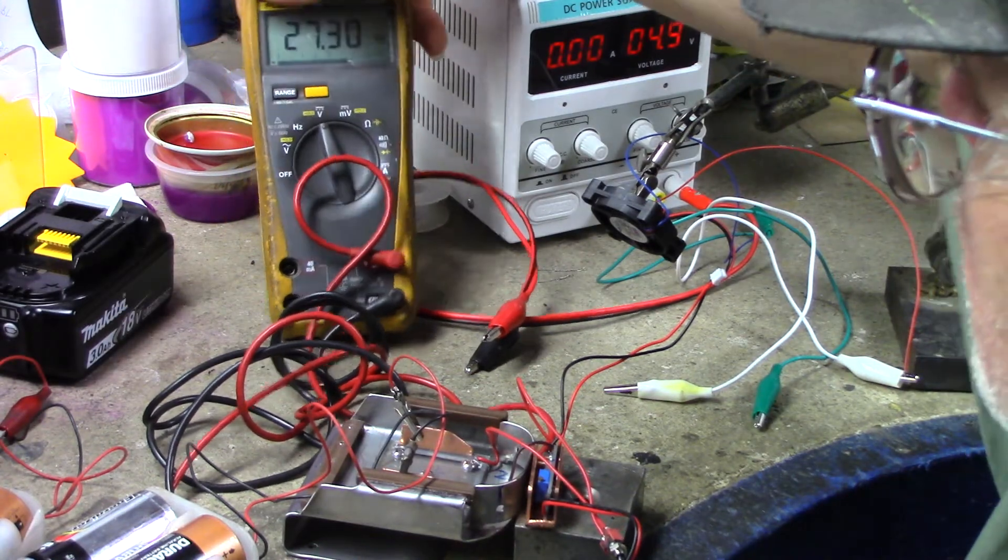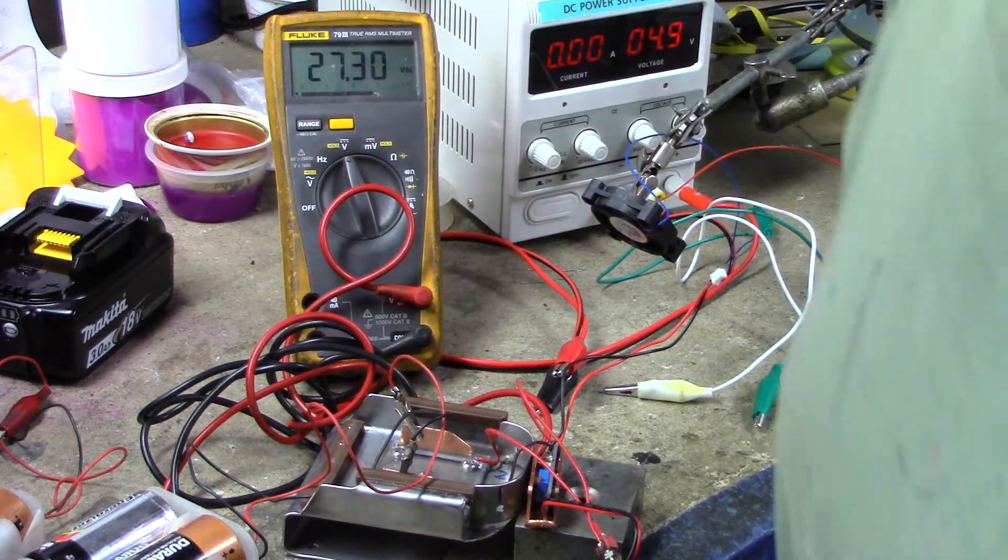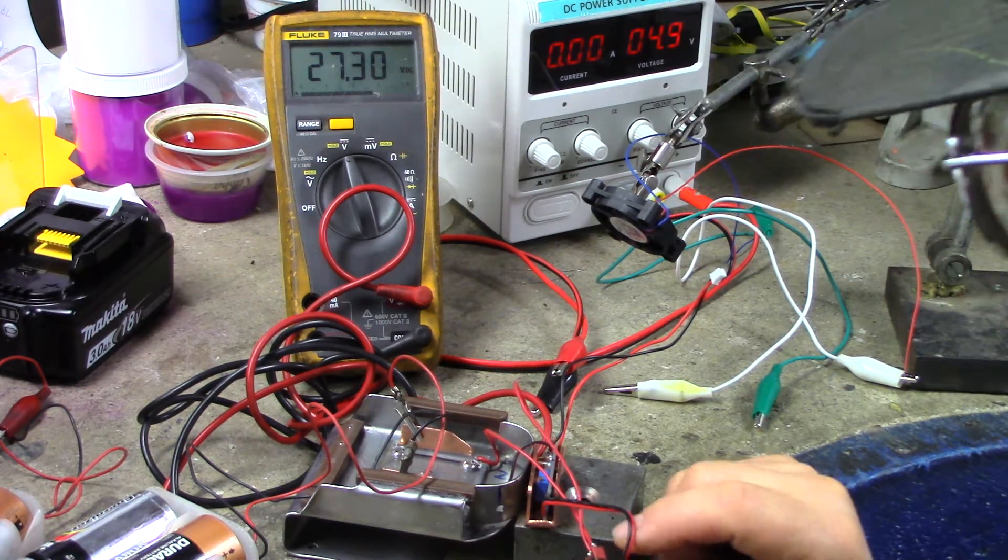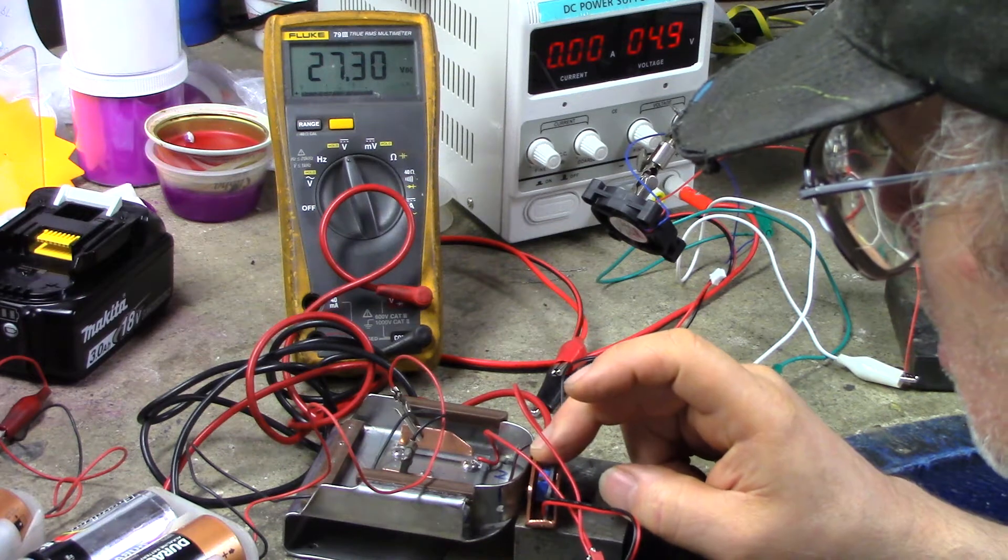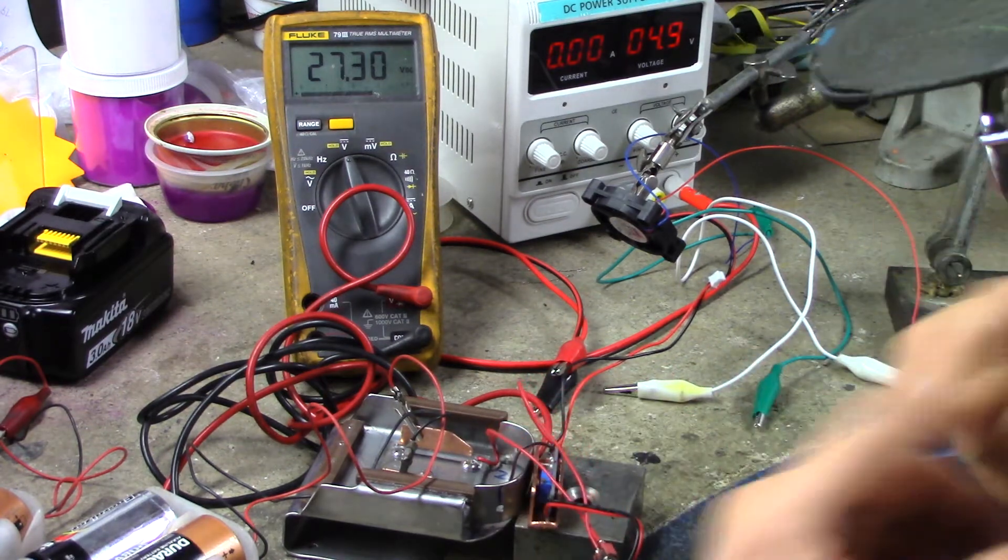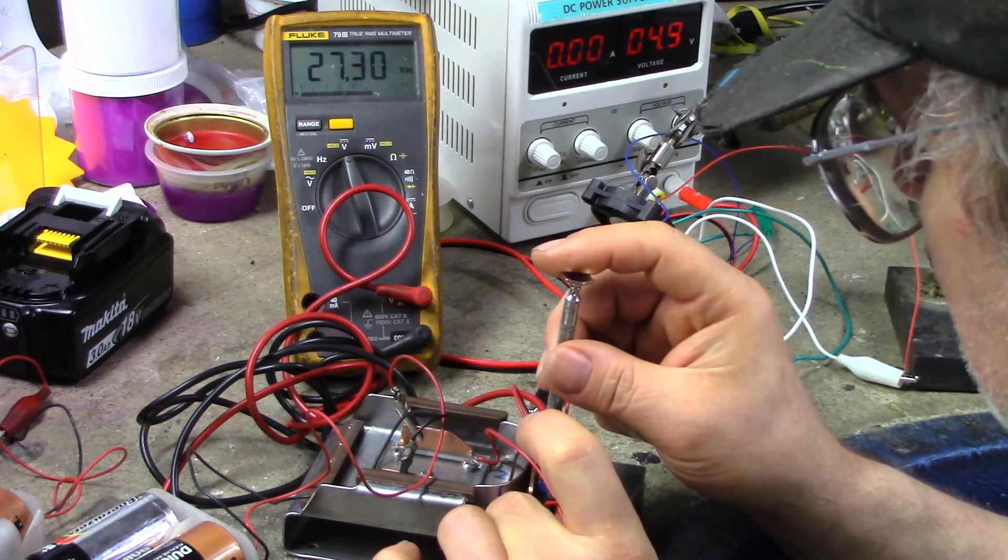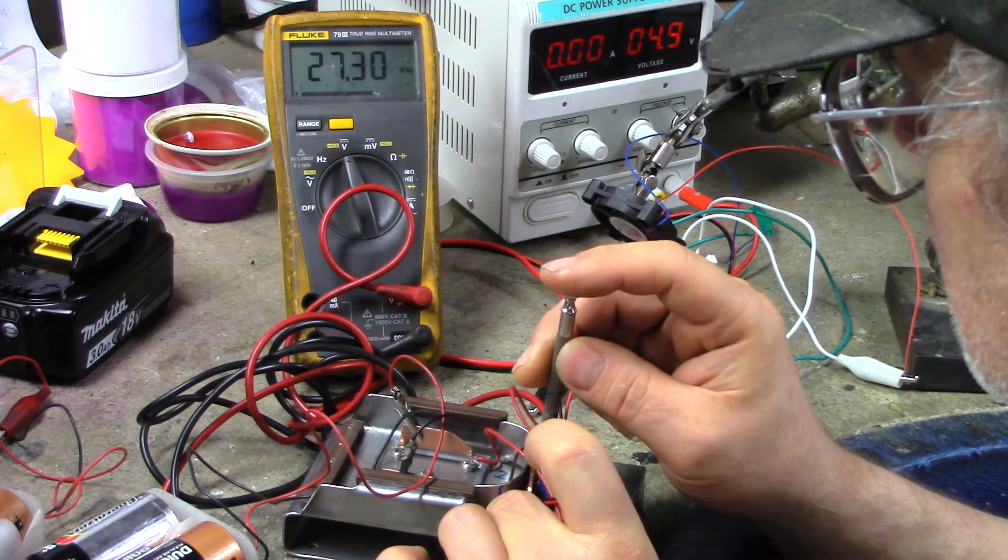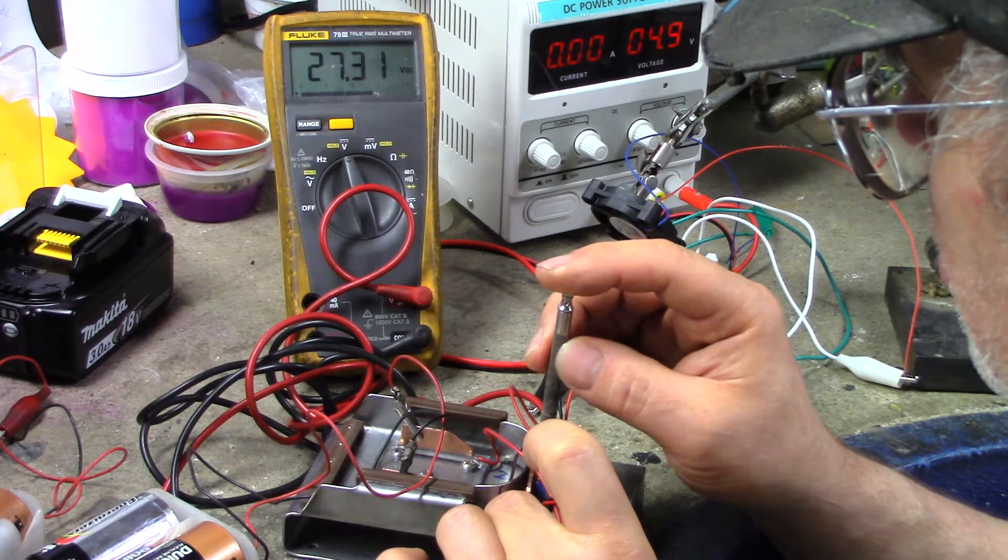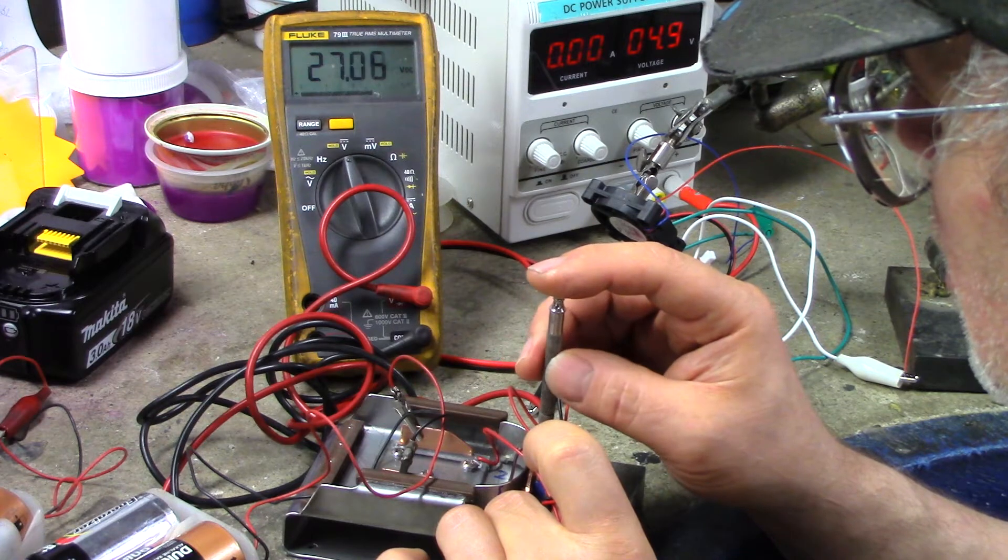All right, here we go with the four cells. It should be a little bit higher than what it was before. It went up a bit, 27.3 volts. Let me make sure I'm good, yeah I can see it. Okay, it's still good, not getting hot.